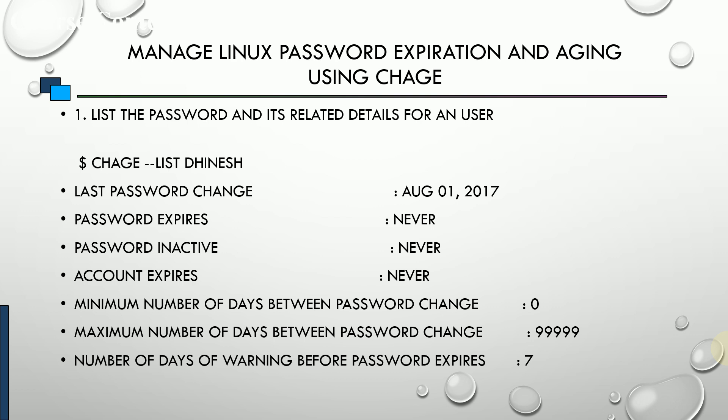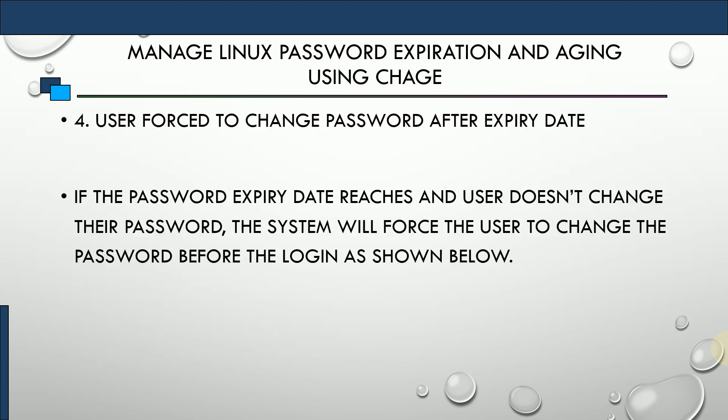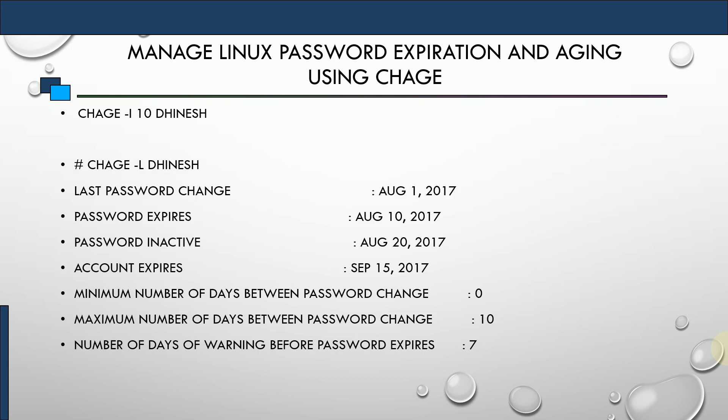We will be learning how to modify these settings so that a user is forced to change their password. We'll understand each parameter: password expiration, password inactive, account expiration, and the minimum, maximum, and warning days. Here in the PPT you can see — after firing the command 'chage -l' with the username, detailed information related to password expiration and aging is displayed for that particular user.